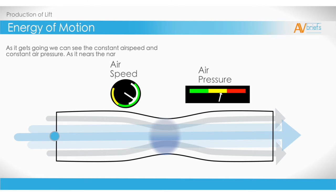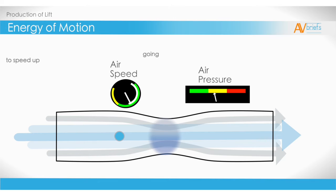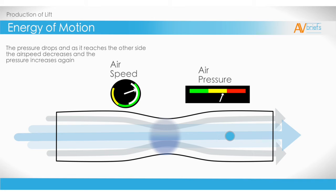As our friends get going, we can see the constant air speed and constant air pressure. As it nears the narrowing it's going to speed up. The pressure drops as it speeds up, and as it reaches the other side, the airspeed decreases due to the larger cylinder, and the pressure increases again. And it's now back to how it was before it reached the narrowing.